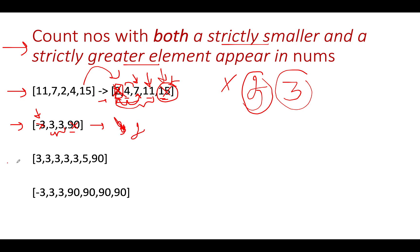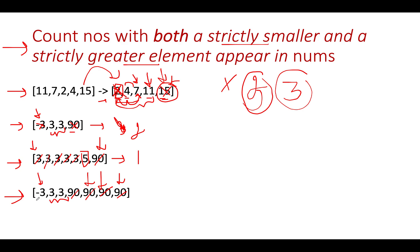In the next example, we have 3, 3, 3, 3, 3, 5, 90. The minimum element occurs multiple times, so all such entries get skipped. What's left is only 5, but 90 is the maximum and also gets skipped, so the answer is 1. Similarly, in the last case with multiple instances of the maximum element, all those get skipped along with the minimum element minus 1, leaving two elements whose answer is 2.